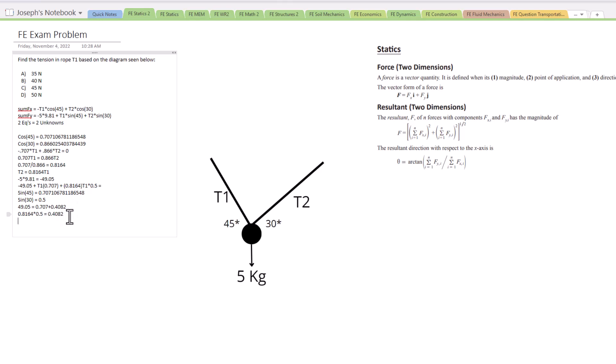And so I'm going to solve that real quick here. 1.115. So 49.05 divided by 1.1152. That's going to equal 43.98 newtons in T1.